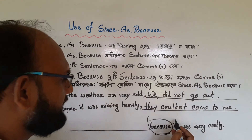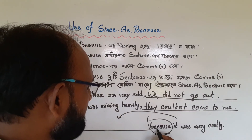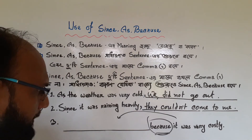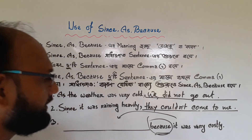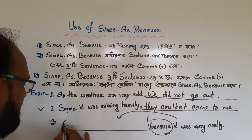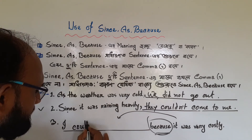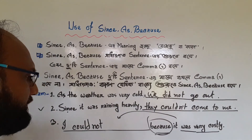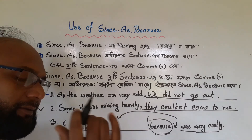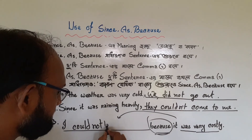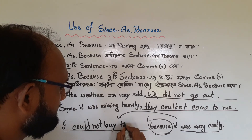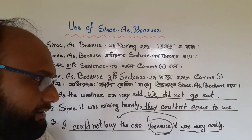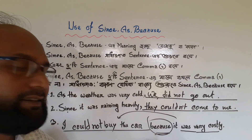Now we will fill up this sentence with a suitable sentence. 'Because it was very costly' — we will write a past tense sentence. 'Because it was very costly, I could not buy the car.' This sentence is now a meaningful, completed sentence.